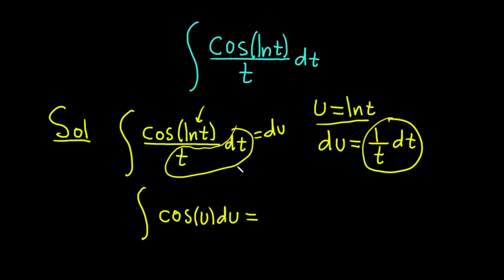And now we have to think about integrating cosine. We're looking for a function whose derivative is cosine. Well, that's just sine. So we have sine of u, plus our constant of integration, capital C.